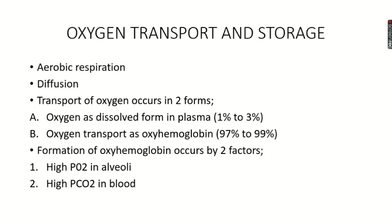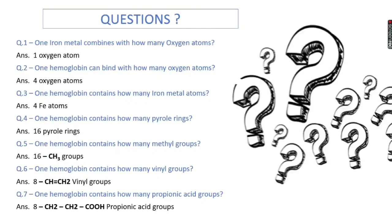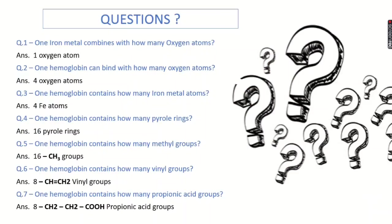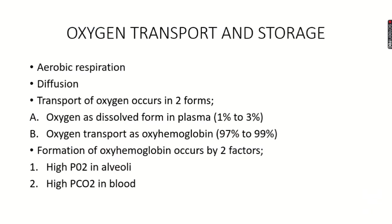Transport of oxygen occurs in two forms. First, oxygen in dissolved form in plasma — but only 1 to 3 percent of oxygen is dissolved in plasma and transported. The majority — 97 to 99 percent — is transported as oxyhemoglobin, where hemoglobin combines with oxygen by diffusion and this oxyhemoglobin is transported throughout the body via blood.